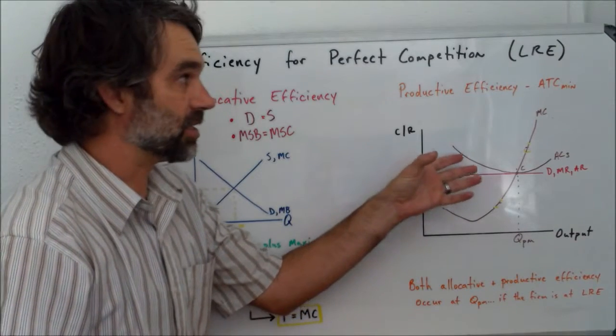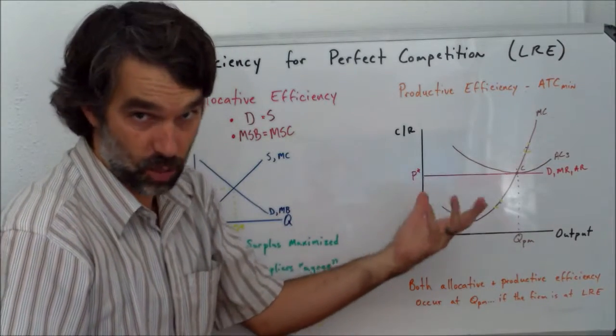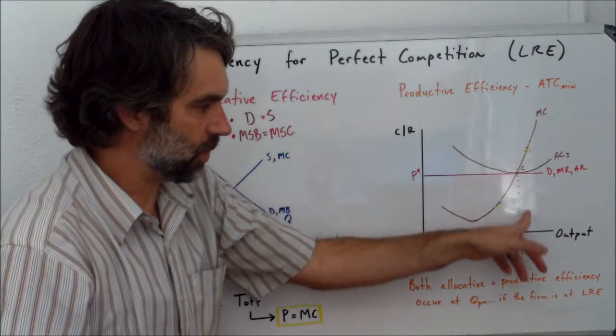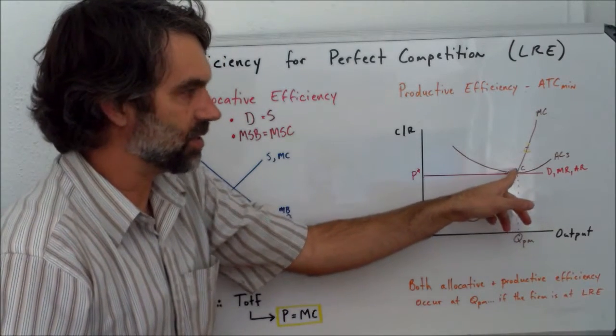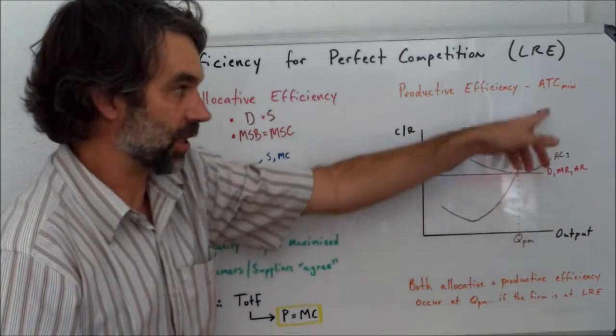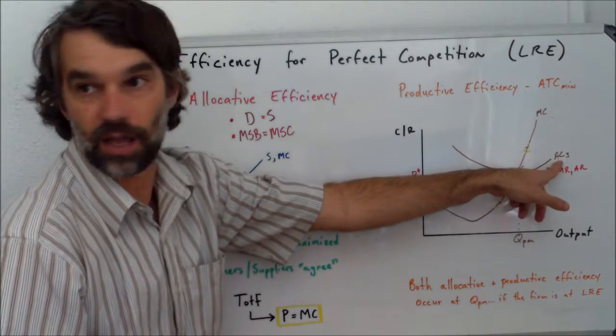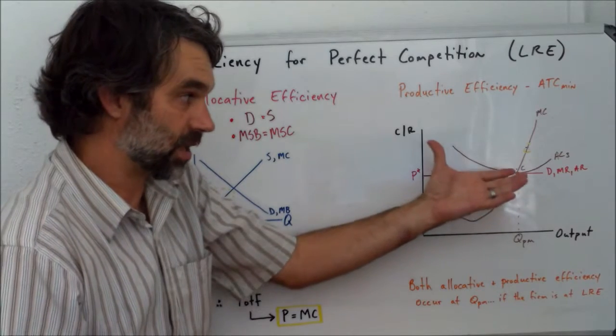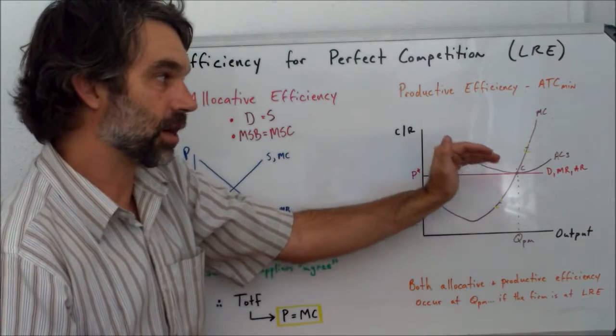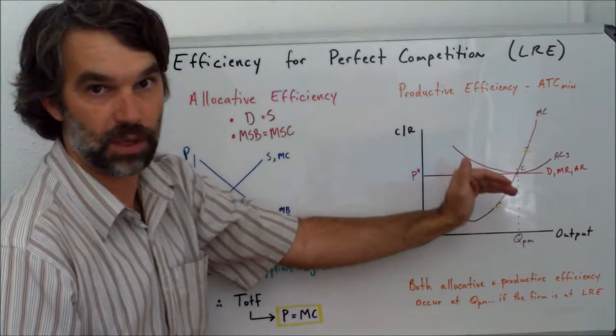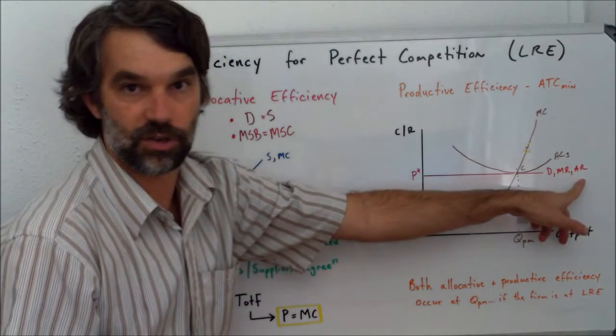So the only one that we actually see at long-run equilibrium is average cost curve 3. And we notice here, it's coincidence, that QPM is occurring where MC cuts through AC. So at this point C, basically all of the curves are converging at that point. Therefore, this is the lowest point of average cost. So this firm is producing in a productively efficient manner. Note, again, this is only occurring or only possible when it's at long-run equilibrium. And remember, it's long-run equilibrium because average costs are equal to, at this point, average revenue.